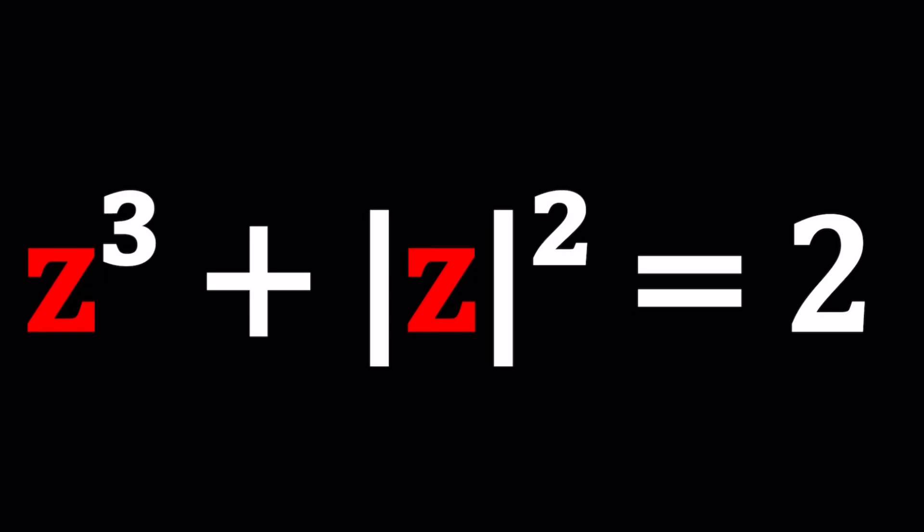Hello everyone, welcome to A plus B I. This channel is all about complex numbers and in this video we're going to be solving a very interesting equation. Why is this equation very interesting? Because it involves z cubed and absolute value of z squared. I'm pretty sure you are guessing at this point what the solutions are going to be like. See if you can find all the solutions to this equation and guess how many solutions we're going to have.